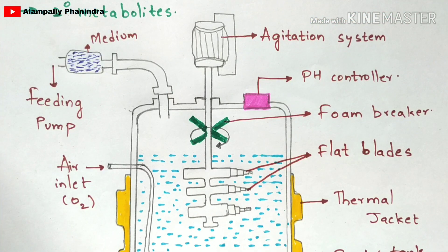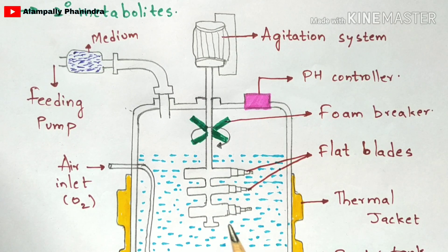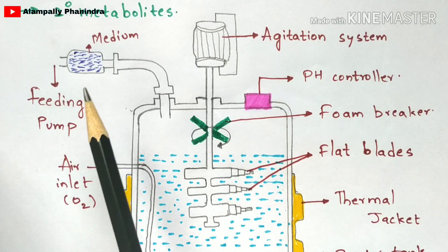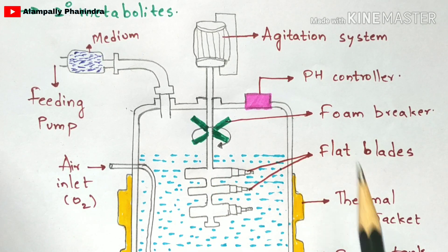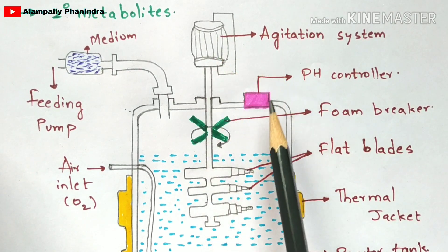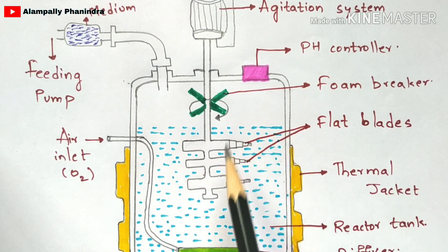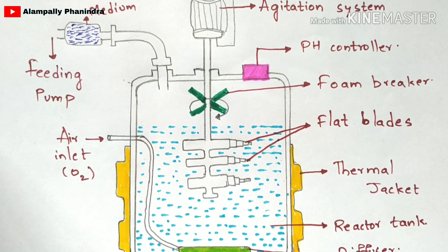The bioreactor is a bio-machine which mainly helps in the conversion of primary metabolites to secondary metabolites. In the case of cell suspension culture, the cell colonies act as primary metabolites. The bioreactor is not only used for cell suspension culture but also for many other purposes. The parts of the bioreactor include: an agitation machine, a pH controller, a foam breaker, flat blades, and a thermal jacket which helps in maintaining the temperature inside the bioreactor.